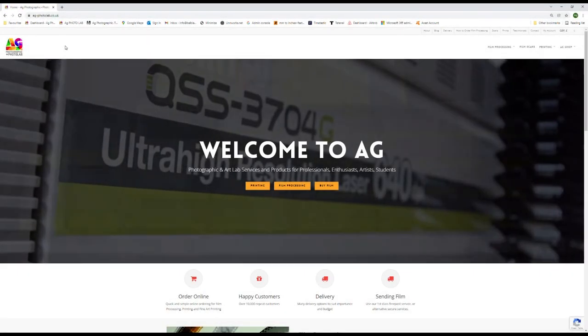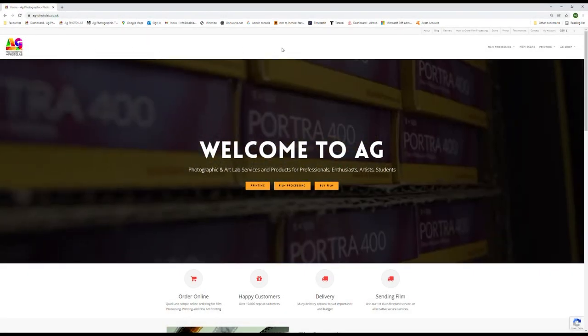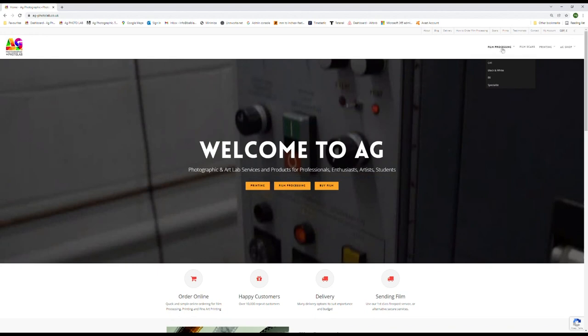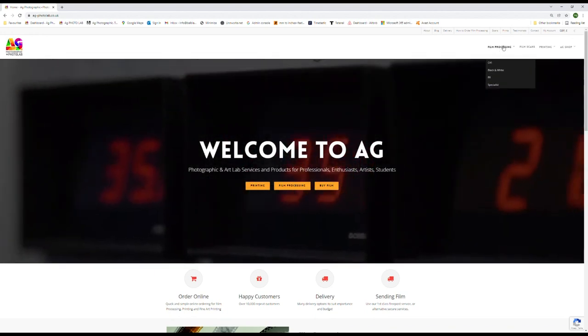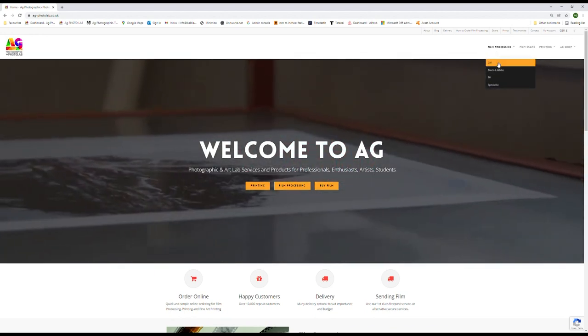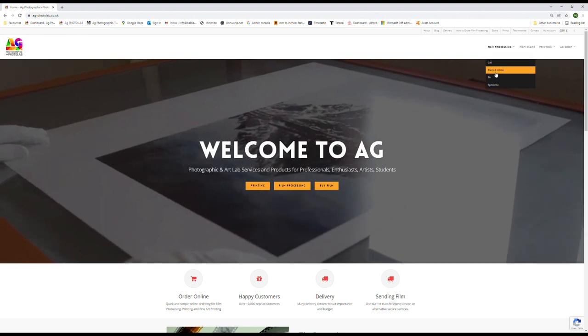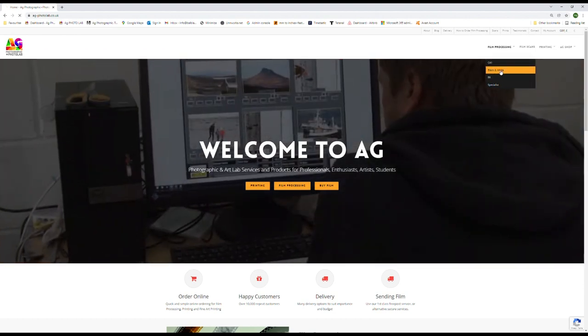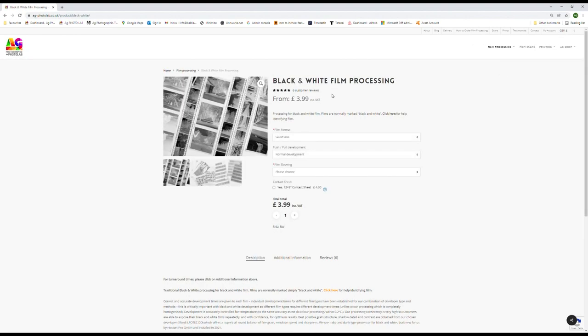Ordering film processing at AG is incredibly simple. Simply navigate to the main film processing section from the main menu. Select the film process you require, for example black and white. And then select options and add to cart.